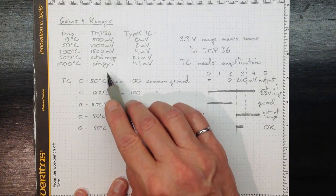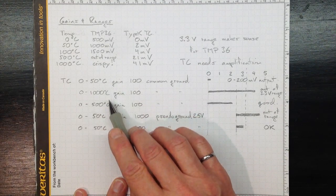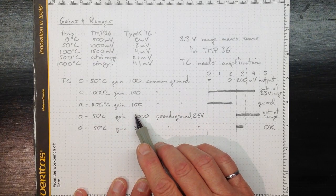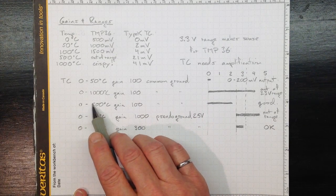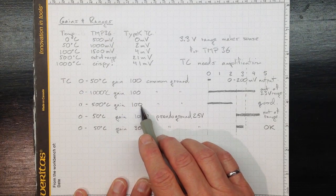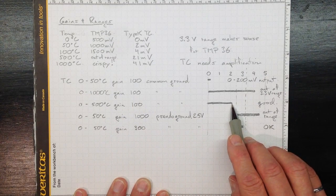So it's important to know what temperatures you're trying to measure, what range of voltages you'll get out of your transducers. If we were looking at zero to five hundred degrees C with a gain of one hundred, that would work just fine.